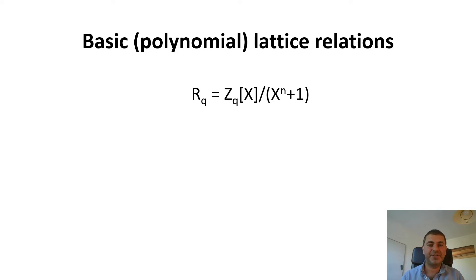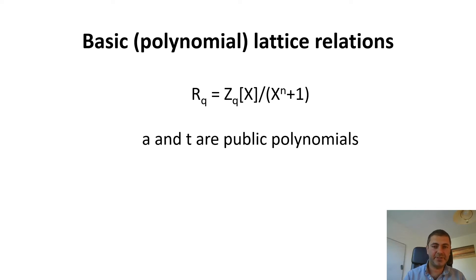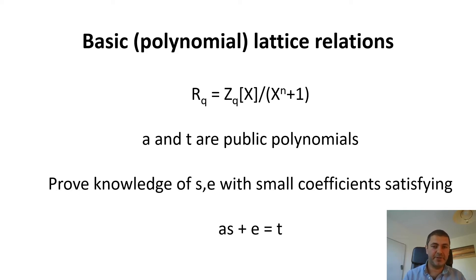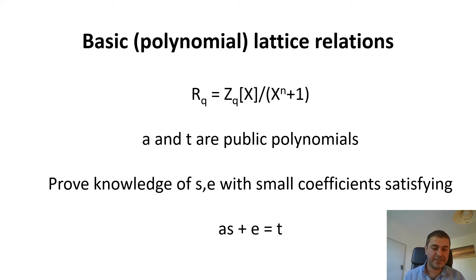We're going to try to design these proofs for a very special class of statements that are very useful for constructing lattice-based schemes — polynomial relations. Consider the standard lattice ring Z_q[x] mod x^n + 1. A typical lattice relation involves public polynomials a and t that everyone knows, and secret polynomials s and e with small coefficients satisfying as + e = t. These come up all the time in lattices, so if we have efficient proofs for these, we can construct protocols with post-quantum privacy based on lattices, with soundness based on discrete log.